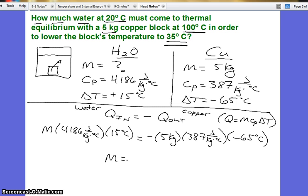And then we solve for the mass, and we get two kilograms. So this is the amount of water necessary if the final temperature is going to be 35 degrees for the copper.